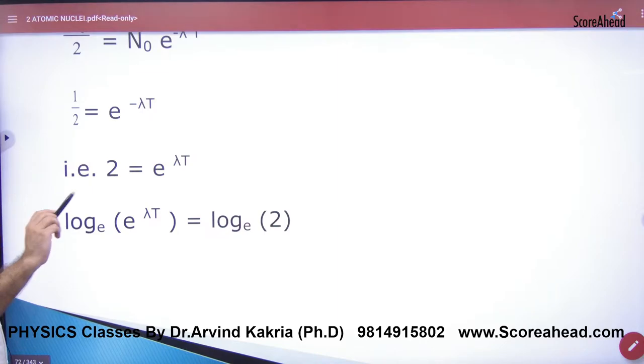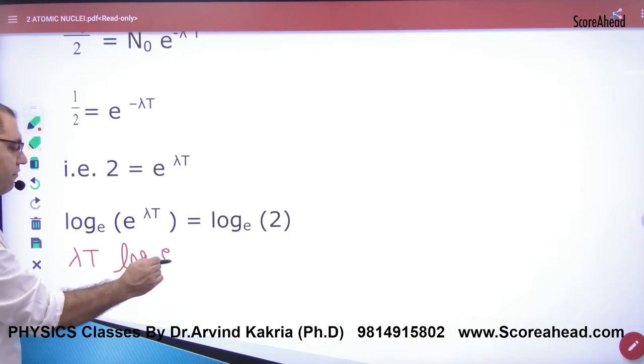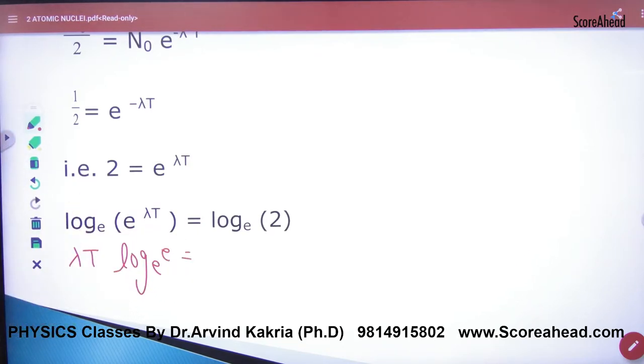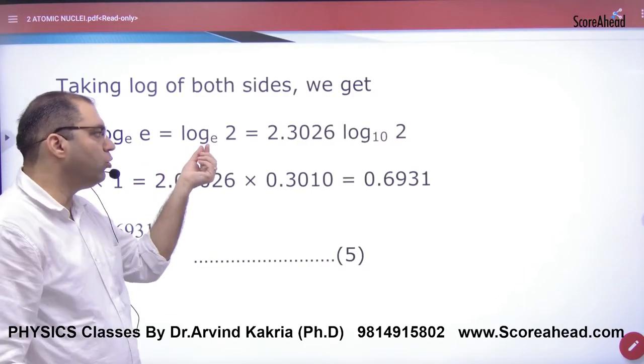Taking log of both sides, so if you take log of both sides, you will take log here and here. So the power of the term, that power you can drop down. So you will have log of e to the base e. Lambda t, so what has it become? Log of e to the base e, and right side log of 2 to the base e.